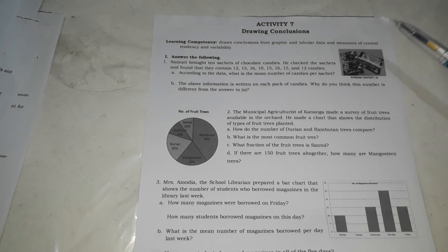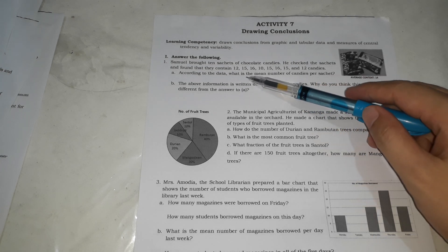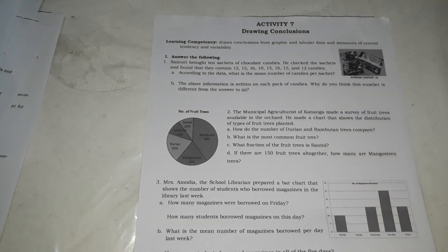Tapos, sinabi dito is, ang average content daw is 14. So, average daw is 14. Karamihan daw, if you solve the mean, it's more or less 14 ang nasa loob. Swerte na kung 16 or 15 kasi ibig sabihin mas marami yan sa karamihan. According to the data, what is the mean number of candies per sachet?